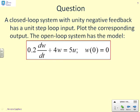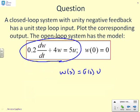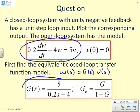A question then. A closed loop system with unity negative feedback has a unit step loop input. Plot the corresponding output. The open loop system has this model. What will we do first then? Well, the first is we want to find the equivalent closed loop transfer function model. Well, if I look at this ODE, here it is 0.2 dw/dt + 4w = 5u, and I want to represent that as a transfer function, then what you will get is w(s) equals G(s) times u(s), and I hope it's obvious to you, if not you'll need to look at previous videos, that G is 5 over (0.2s+4).